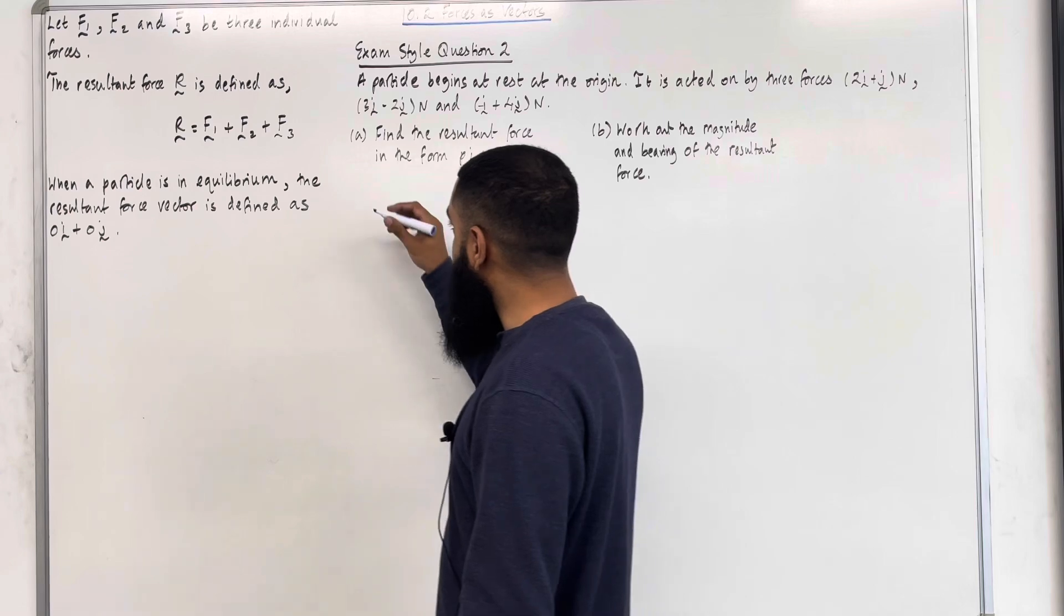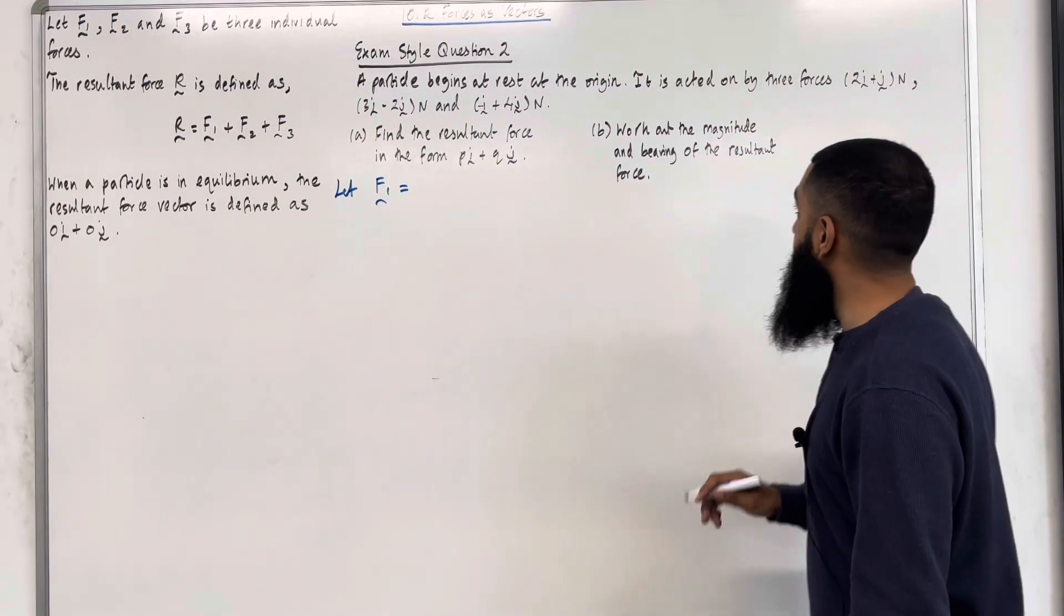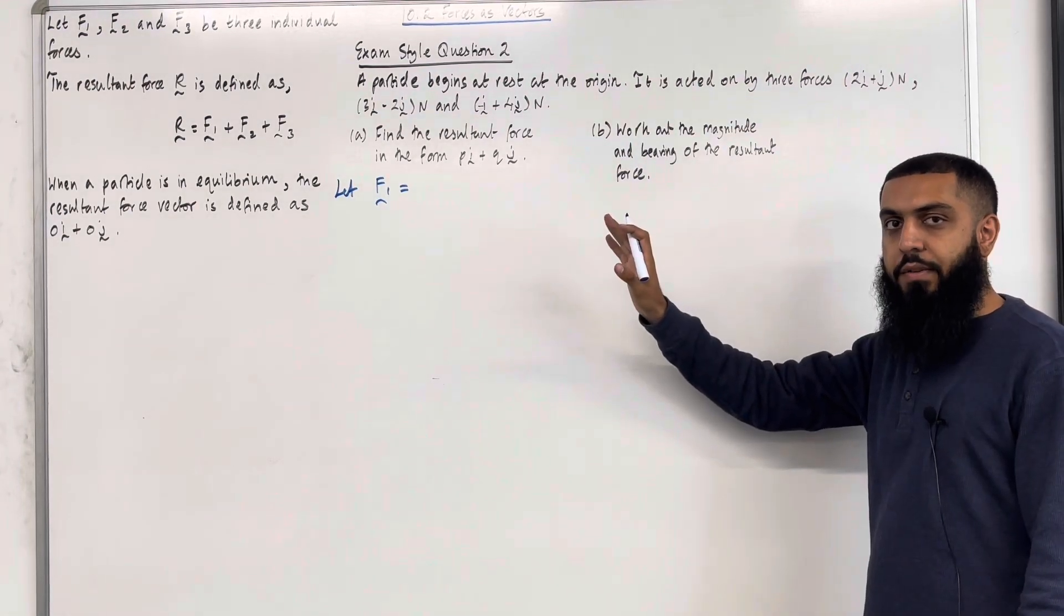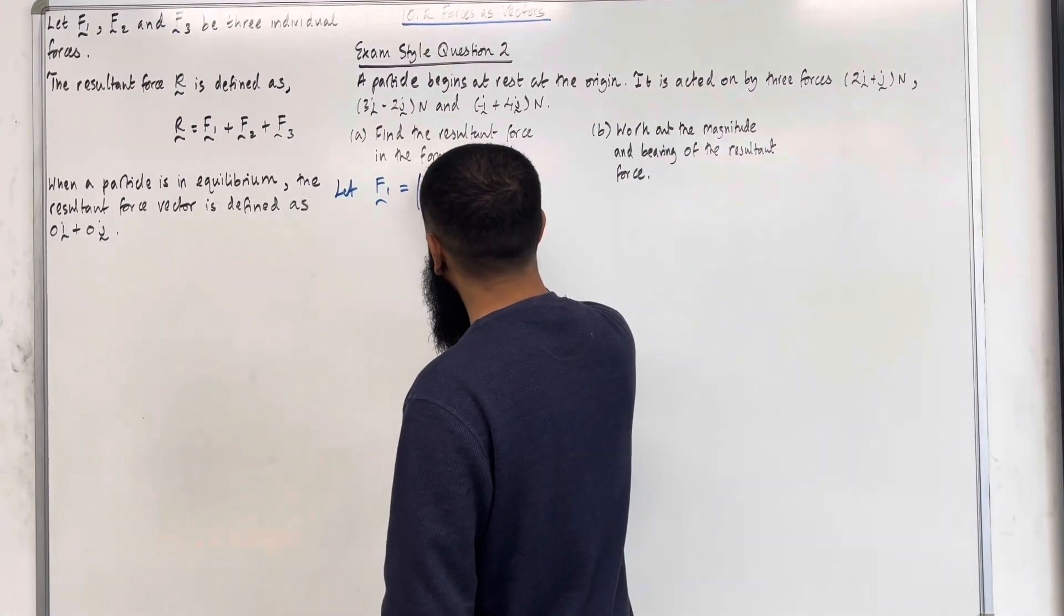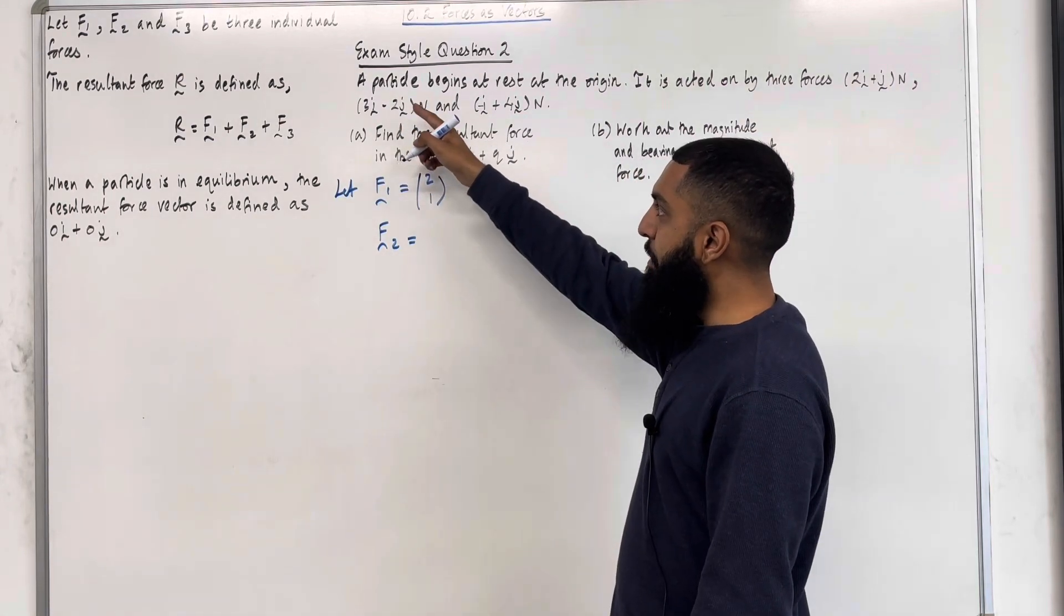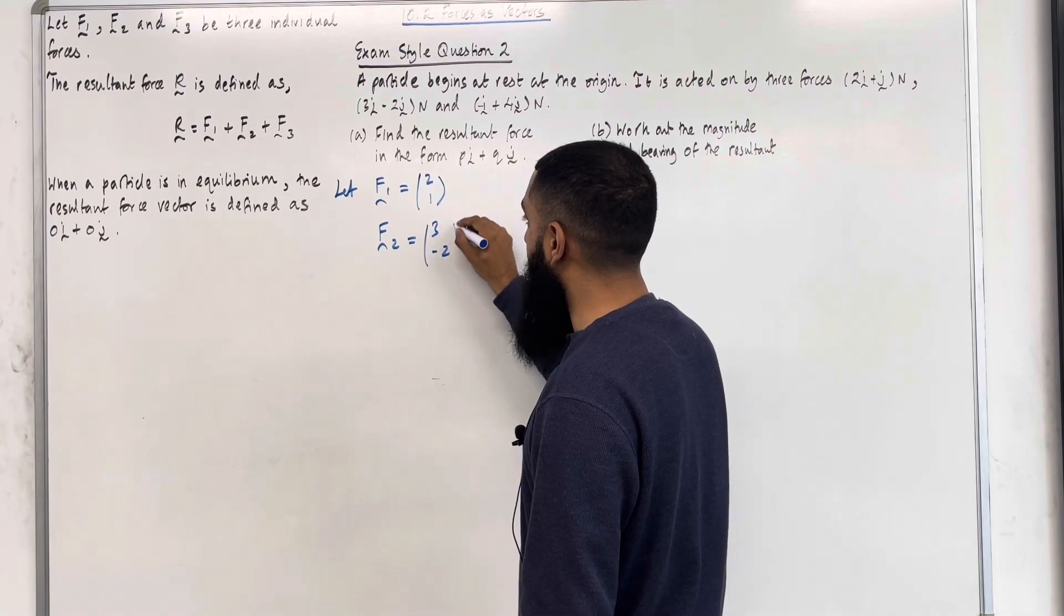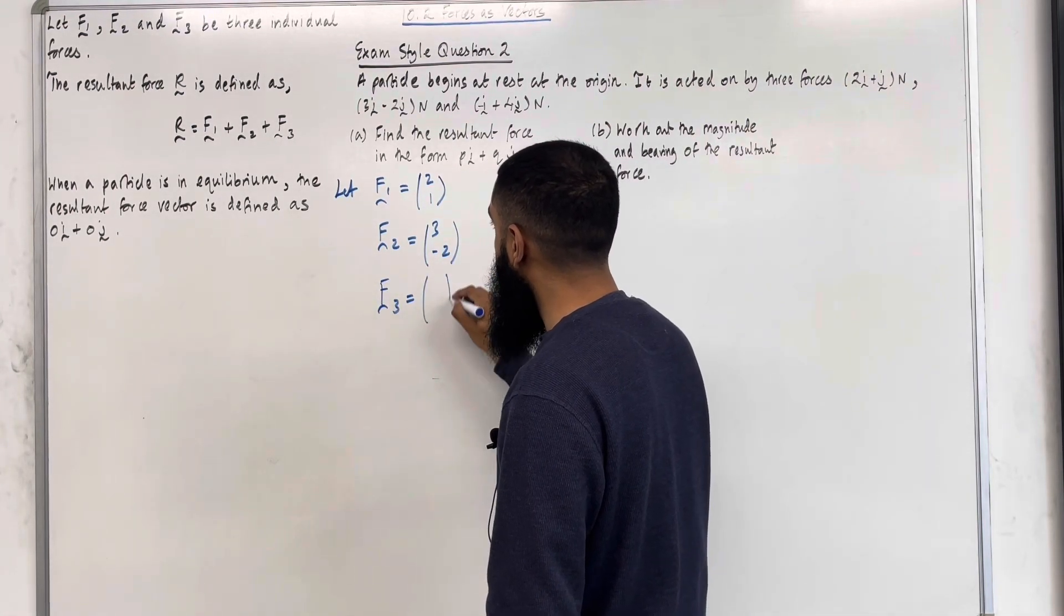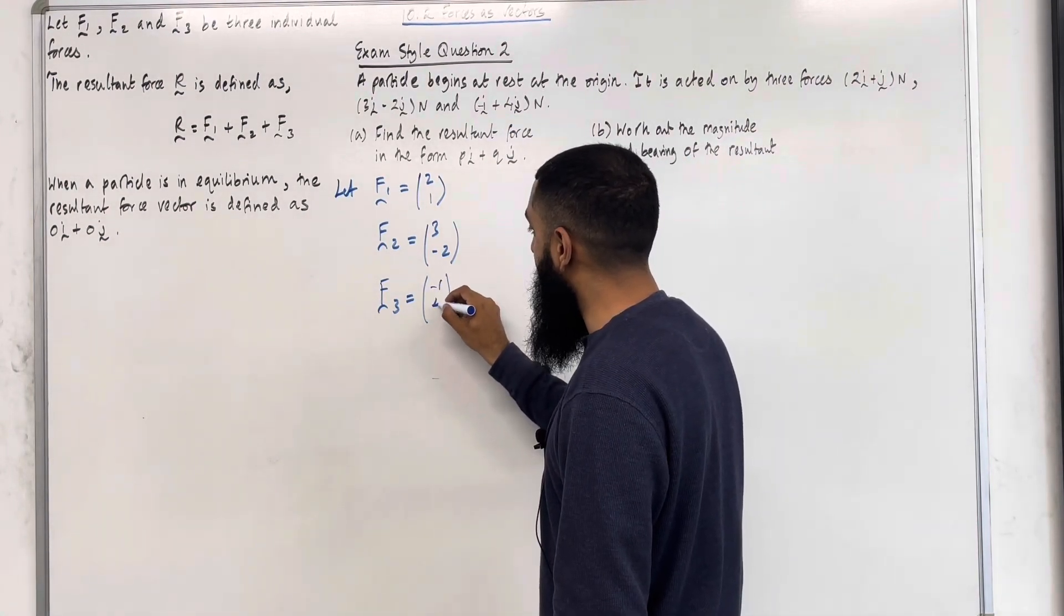I'm going to start by saying, let F1 equal the first force vector, which is 2I plus J Newtons. I'm going to rewrite it in column vector form for simplicity. So, I've got 2 and 1. F2 is the second force vector, 3I minus 2J Newtons. As a column vector, this is 3 and minus 2. F3 is the third force vector, which is minus I plus 4J Newtons. As a column vector, this is minus 1 and 4.